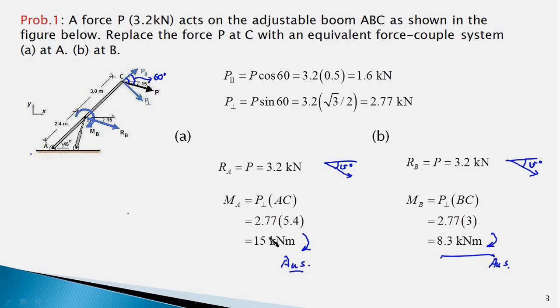Notice that in both cases, the magnitude and direction of the force is the same — that is, RB equals RA and equals P. However, the magnitude of the moment differs from point to point. So we have learned how to replace a force with an equivalent force-couple system acting at a specified point. In the next video, we will be dealing with several forces acting on a body and reducing it to a force-couple system at a specified point. Thanks for watching, and see you in the next video.